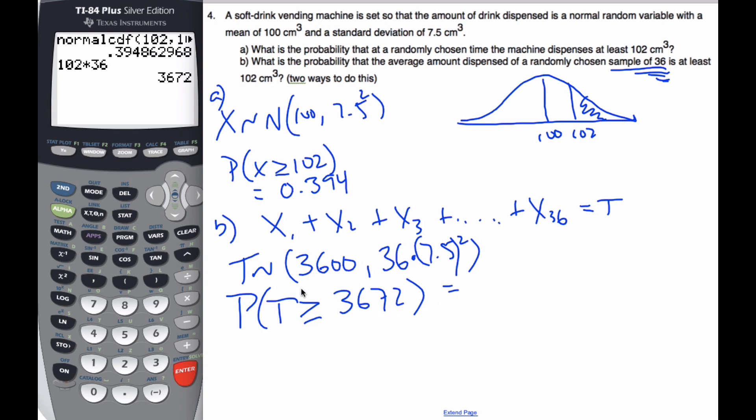If I put this into my calculator with these values, I will get 0.0548, which is considerably smaller than 39 percent, because this is saying the average of all of these machines is going to be more than 102. Now this is using expectation algebra from previous.